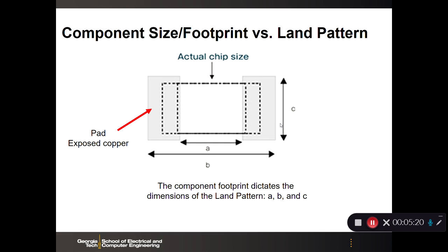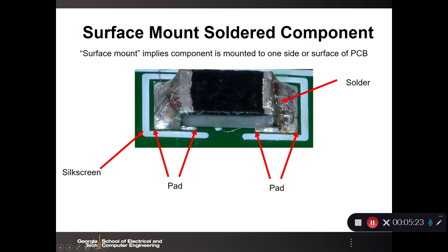Here's an example of a surface mount component soldered to the board. Surface mount implies the component is mounted to one side — one surface — of the PCB. Many PCBs are two-sided with a top and bottom side. For a chip resistor, the pads are much wider than the actual leads of the chip resistor itself, giving room for the solder to provide both an electrical and mechanical connection of that part to the PCB.